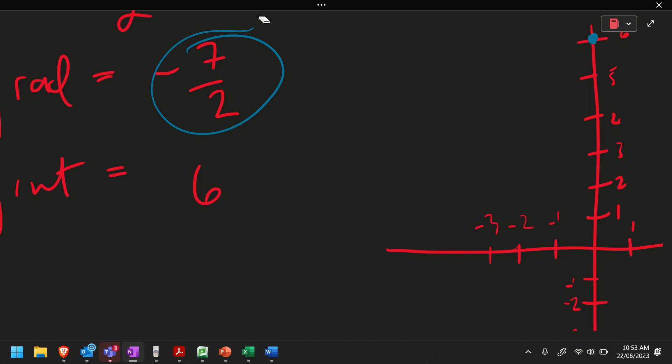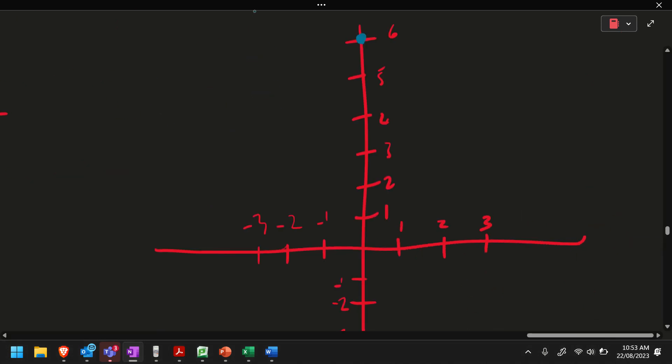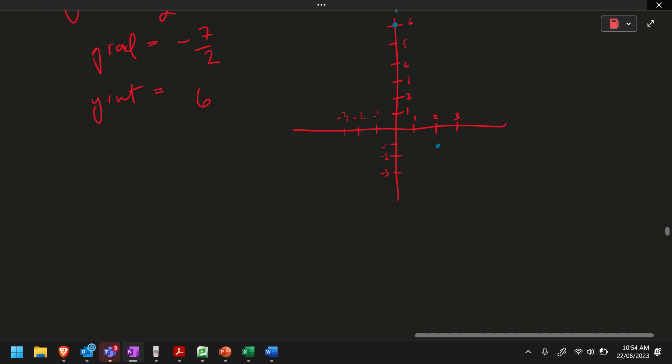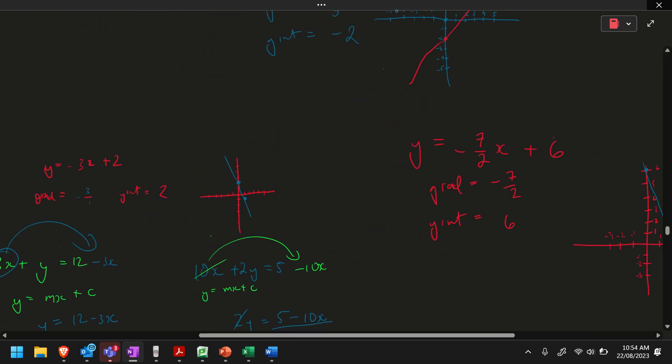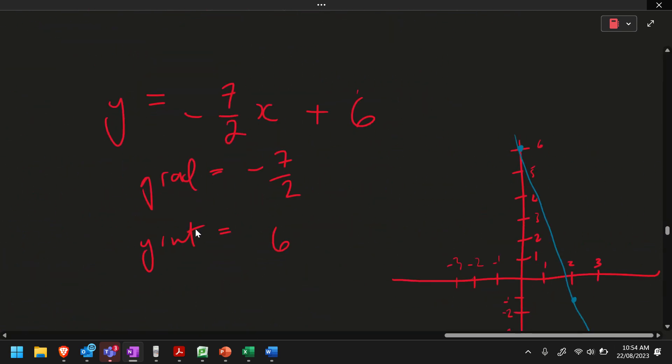My gradient is negative 7 over 2, which means I go down 7 and across 2. So on my actual graph, start from 6. I go 1, 2, 3, 4, 5, 6, 7. And then you go across 2. 1, 2. There's your other dot. You've got your 2 dots, and then you just draw your line. Okay, that's all you're doing for that method, the gradient and intercept method.